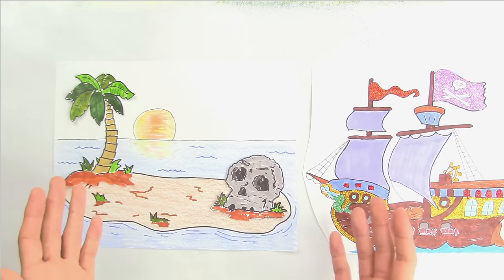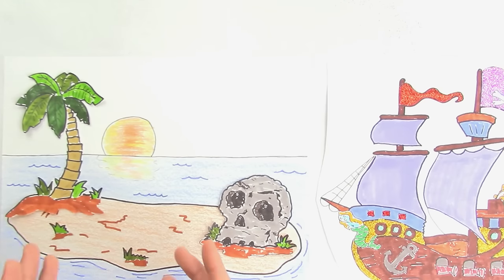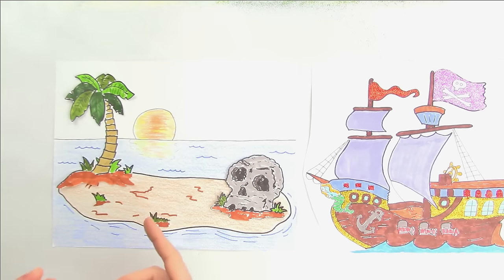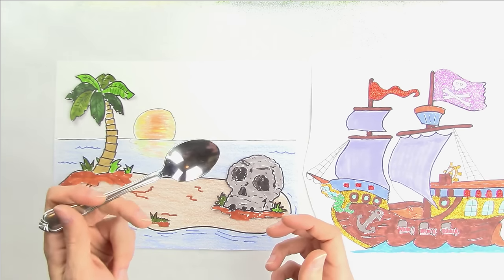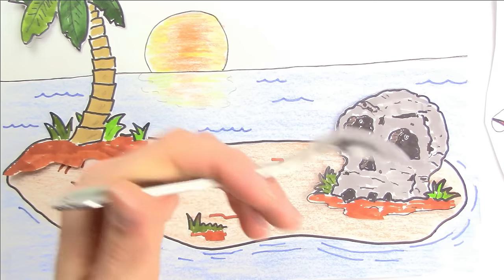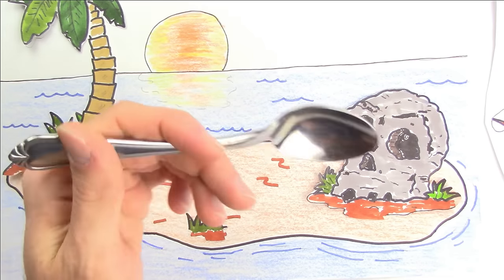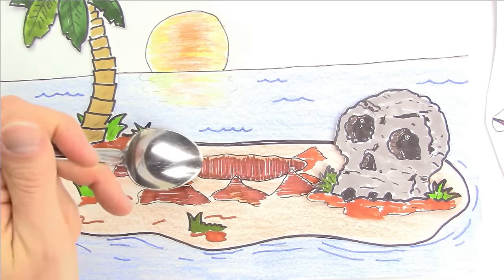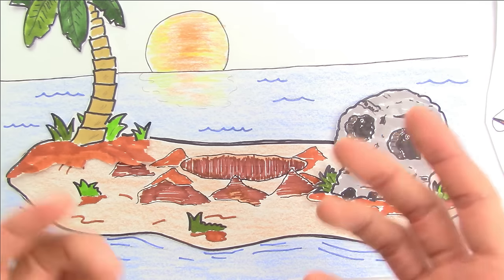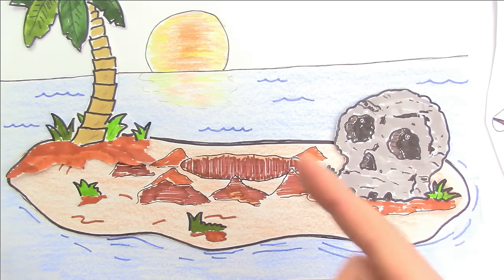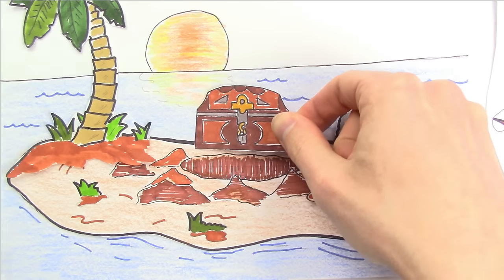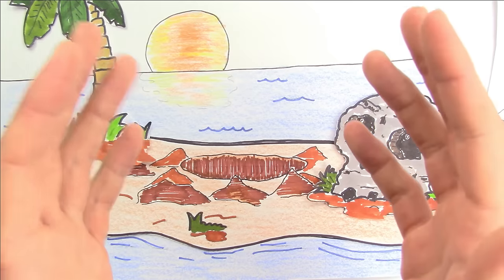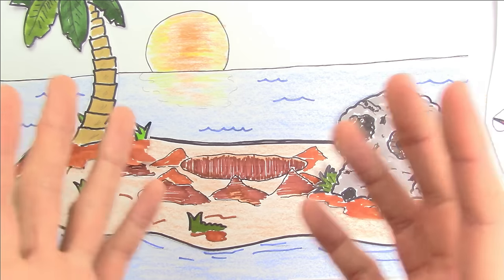We avoided all the sea dangers and we made it to the island. So let's bury this treasure box between the palm tree and skull rock. I need some kind of digging utensil. I guess this will work. Okay, let's dig a hole right here. I think this should be deep enough. So let's drop the treasure chest in the hole. And now we just need to fill this hole back up to make it look like no one was ever here.